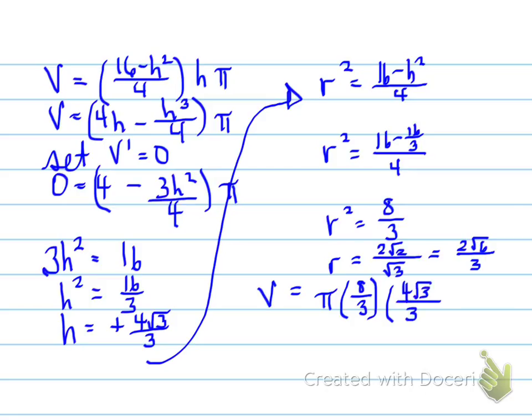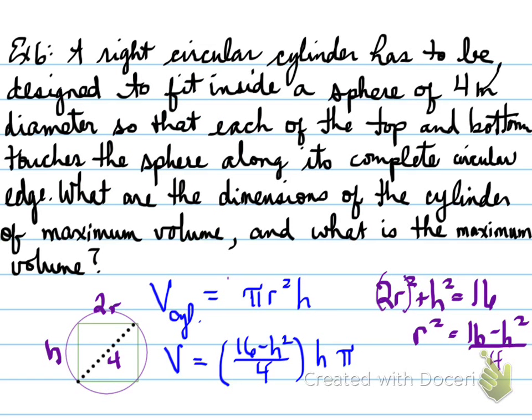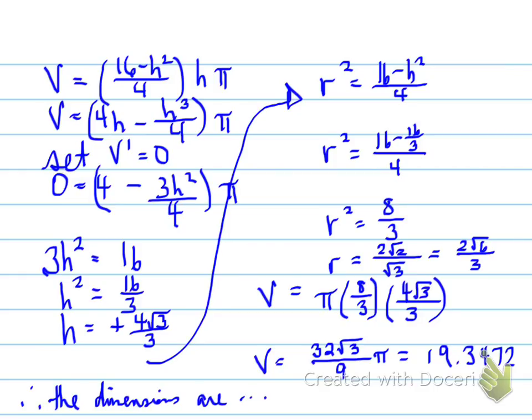Once we calculate that, we can calculate the volume. So plugging in πr², which is 8 over 3, times h, which is 4√3 over 3, we get a volume of 32√3 over 9 times π, which is approximately 19.3472 units cubed. In this case, we're looking at it being meters. So the answer to this is going to be meters cubed. So the dimensions are maximum volume is 19.3472 meters cubed. And the different dimensions, you can calculate the decimal values yourselves.